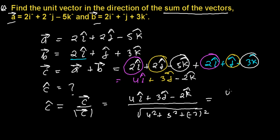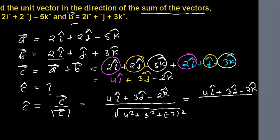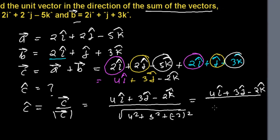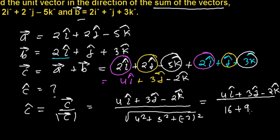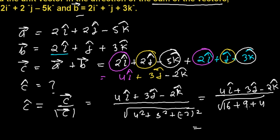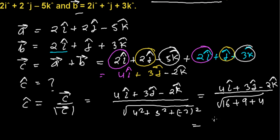So we're going to get now here 4i cap plus 3j cap minus 2k cap divided by—now see here, 4 squared I can write as 16, 3 squared is 9, and 2 squared is 4. So we're going to get here 16 plus 9 is 25, plus 4 is 29. So it's going to be now 4 divided by root 29 i cap, plus 3 divided by root 29 j cap, and minus 2 divided by root 29 k cap.